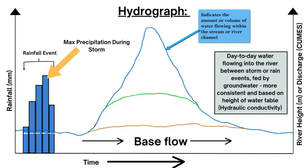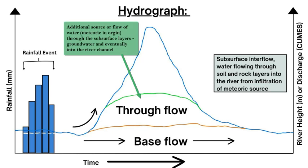The first part of the hydrograph is the base flow. This is the more consistent flow of water from the groundwater source into the river, providing the day-to-day average flow of water through the river channel. This does not correspond to any storm events or large precipitation events, but rather to the average precipitation in that location that falls as meteoric water on the watershed and then flows into the groundwater and into the river, based on the water table and climate. It is the consistent and constant flow of water creating the baseline.